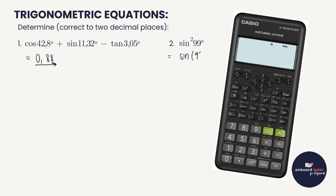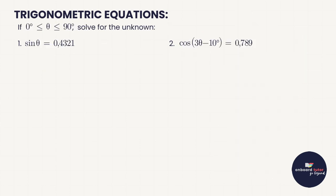For sine squared of 99 degrees, the calculator automatically opens brackets, but we want the whole thing to be squared. Many modern calculators handle this, but if you're not getting the right answer, it's good habit to write the squared outside the brackets. So sine of 99, squared, gives us 0.98 to two decimal places.